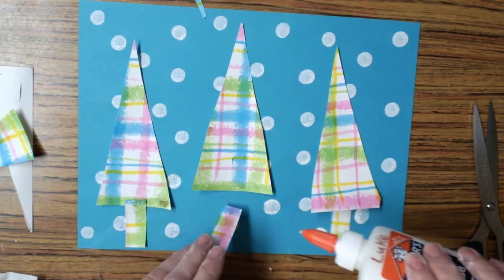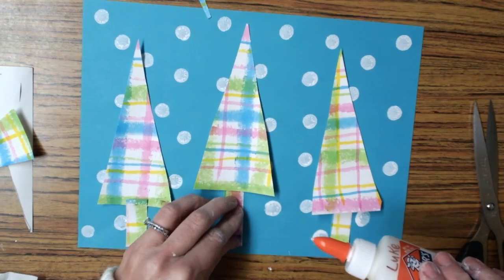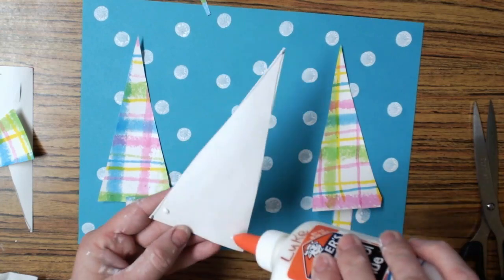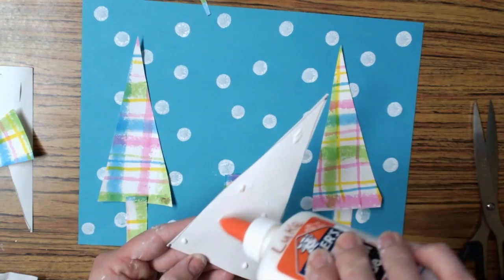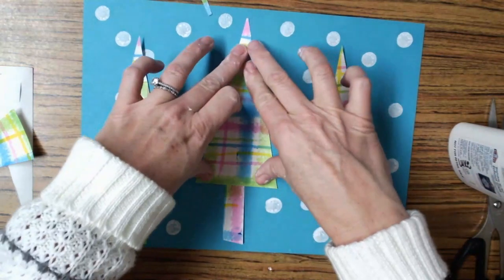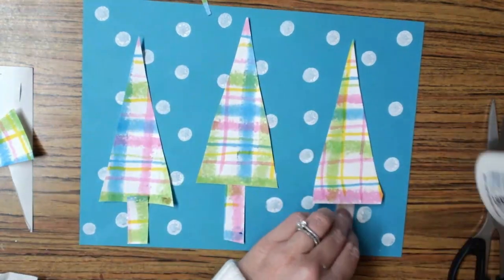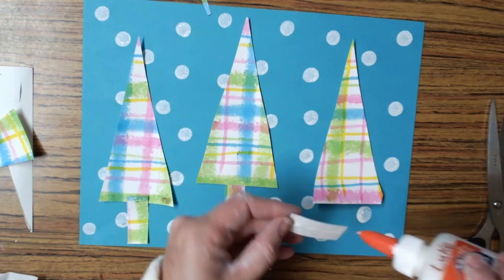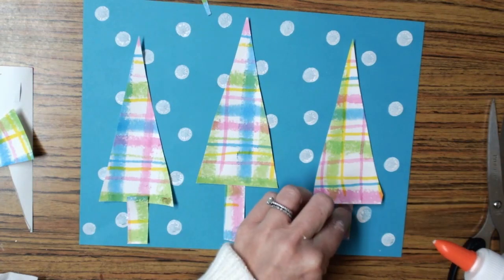When I use my glue, I want to make sure I'm using enough glue so that the whole thing sticks down. If you're using liquid glue, make sure you're doing dot, dot, not a lot, and if you're using a glue stick, make sure you're covering the whole thing with glue.